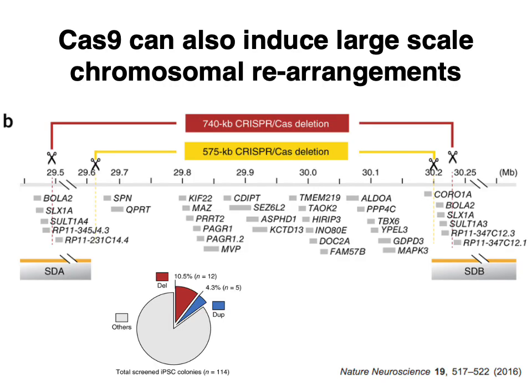While much genome editing involves small-scale changes such as single point mutations or small insertions and deletions — for example, introducing risk variants for certain diseases in cell line models — it's worth noting that people have also figured out how to use CRISPR-Cas9 to make larger-scale changes, including near-megabase deletions from the genome. CRISPR-Cas9 is fairly flexible, and with careful experimental design, large-scale genomic changes are achievable.